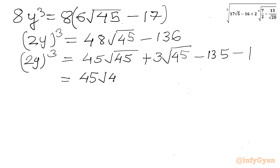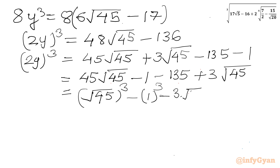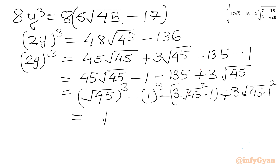Now notice that 45√45 minus 1 is (√45)³ minus 1³, and the pattern matches a³ minus b³ equals a³ minus 3a²b plus 3ab² minus b³. Checking: 45√45 minus 135 plus 3√45 minus 1 matches (√45 minus 1)³. So (2y)³ equals (√45 minus 1)³.